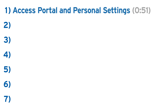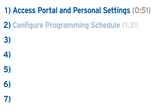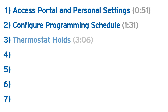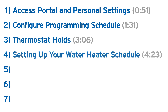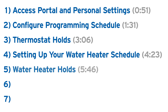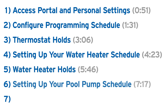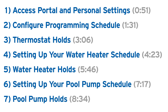The seven topics are: 1. Access Portal and Personal Settings, 2. Configure Programming Schedule, 3. Thermostat Holds, 4. Setting Up Your Water Heater Schedule, 5. Water Heater Holds, 6. Setting Up Your Pool Pump Schedule, 7. Pool Pump Holds.